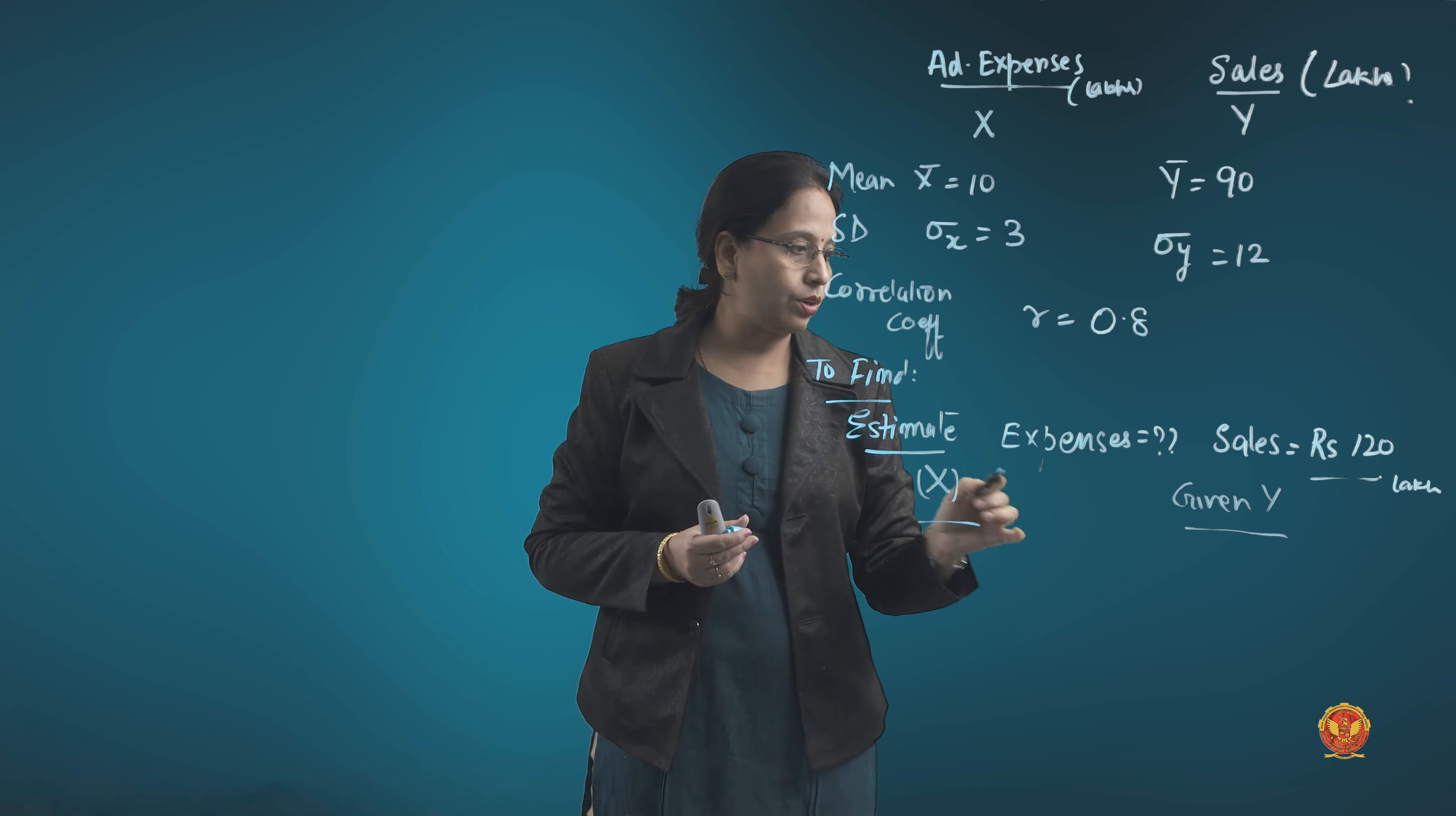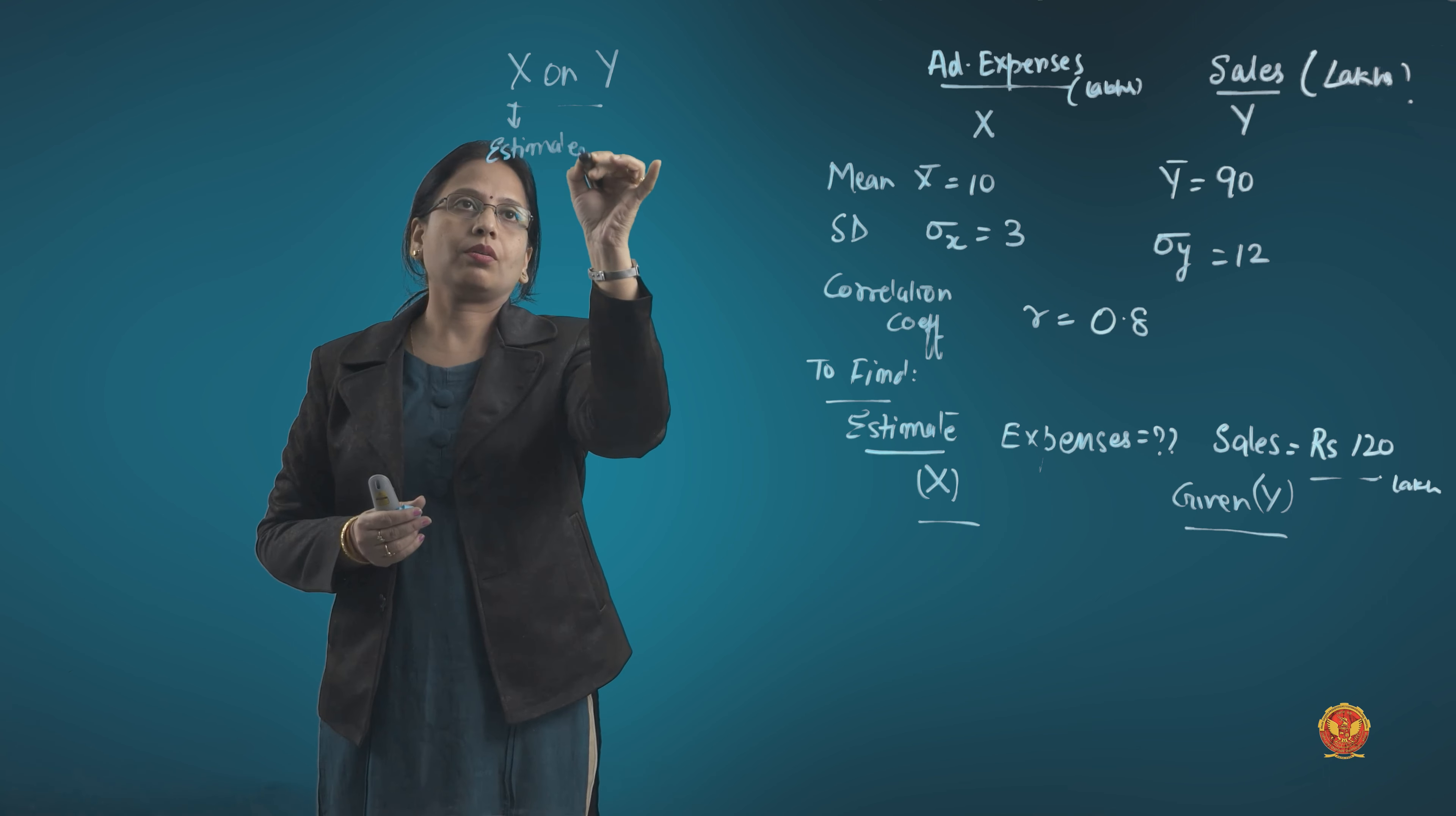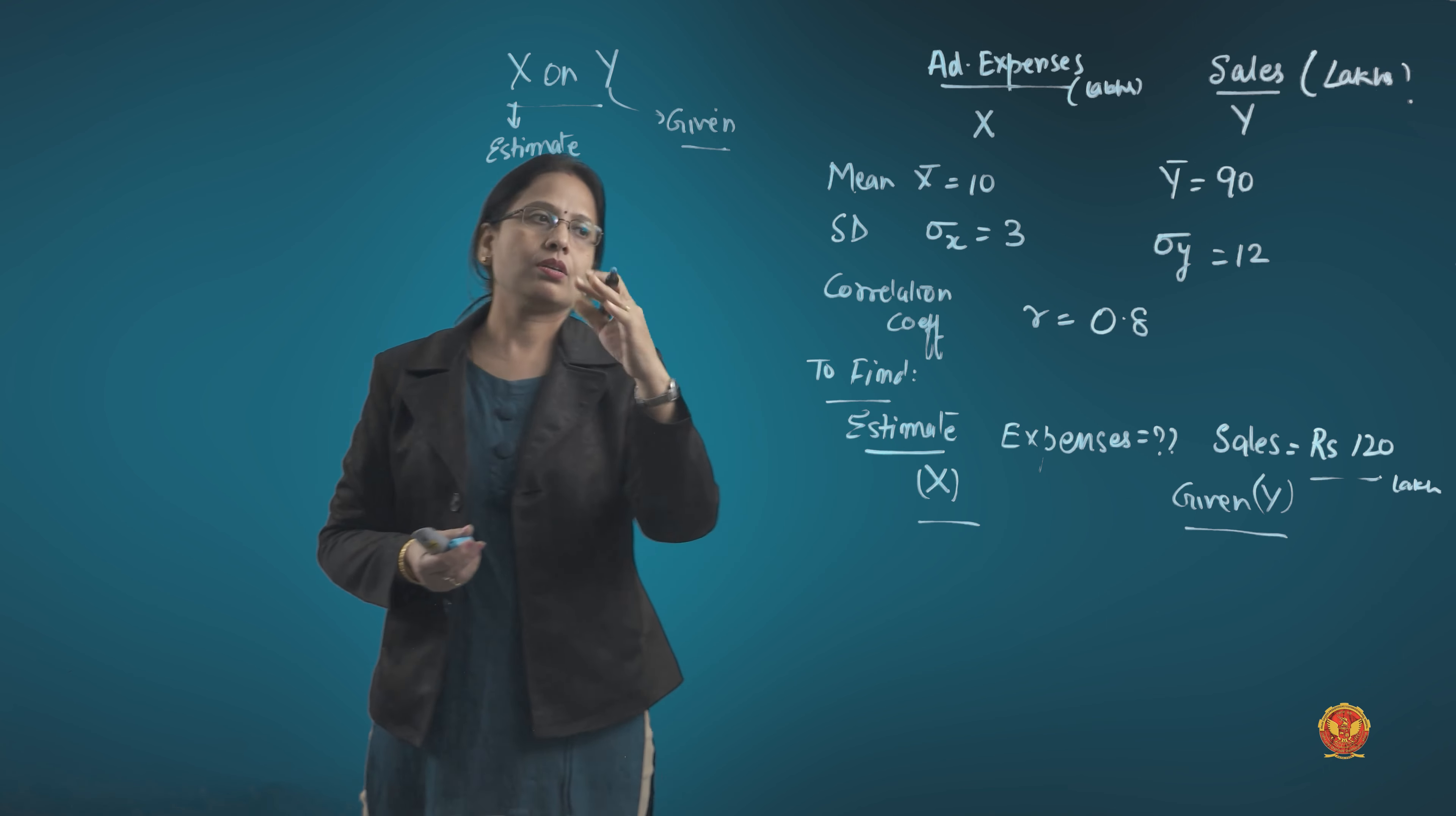Now stick to the rule. When y is given and x has to be estimated, then we have to use the equation x on y. In the previous numerical, we had to estimate y from x, so we used y on x. In this numerical, we have to estimate x, the advertisement expenses represented by the x variable.